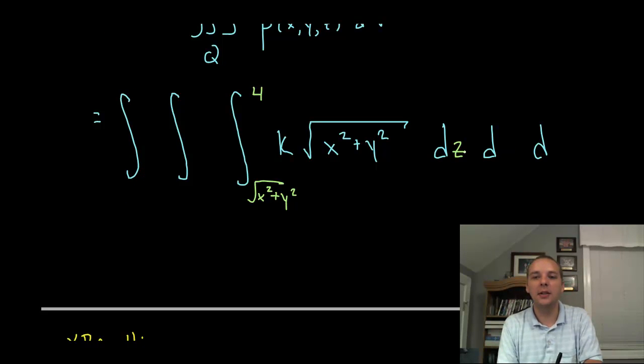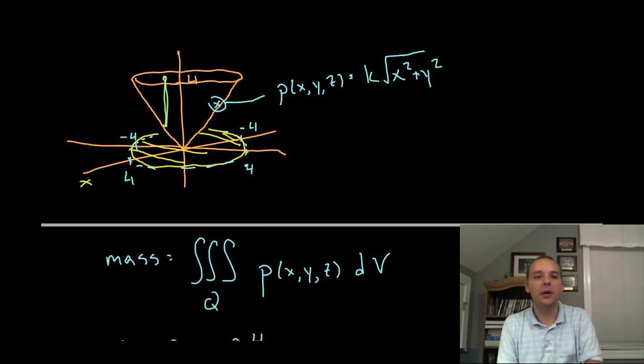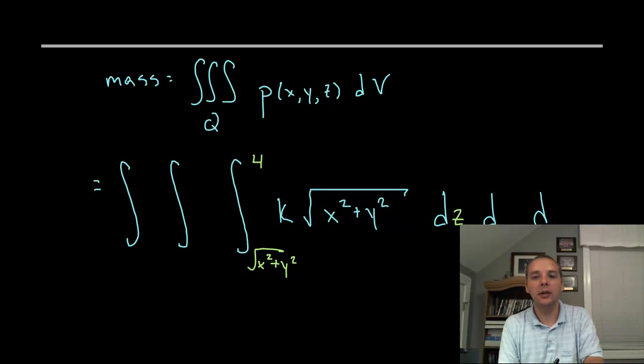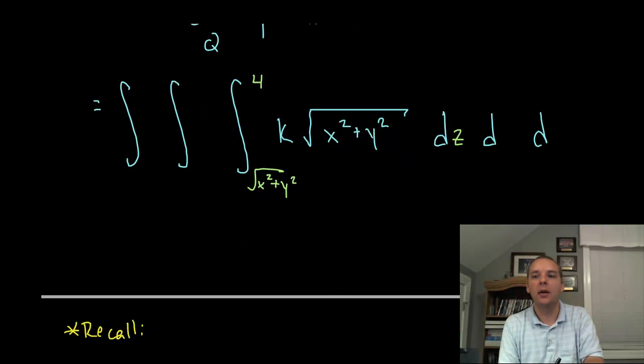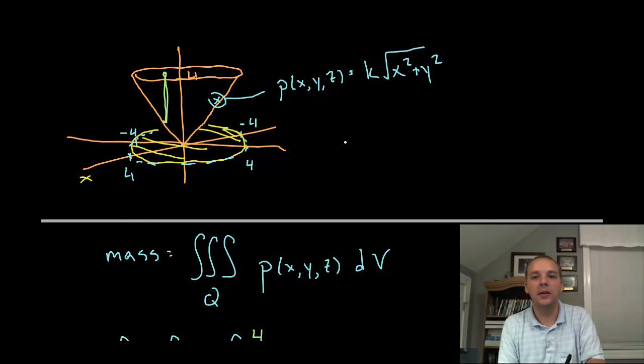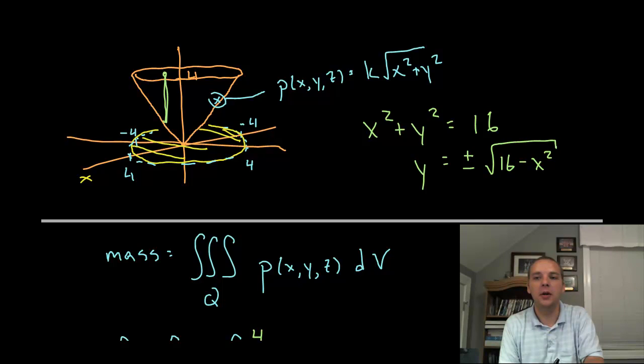Alright. So now we can go dz, dy, dx, or dz, dx, dy. The region that we're integrating over in the xy plane if you look here shaded in yellow is a circle. So we could do this really in either order. I don't think it would really matter. That circle by the way being of radius four would be x squared plus y squared equals sixteen. That's a circle of radius four. So it would be probably in my opinion most natural to solve for y. So y would be plus or minus the square root of sixteen minus x squared like so.